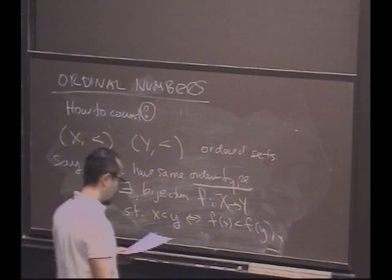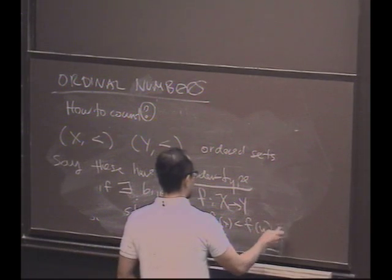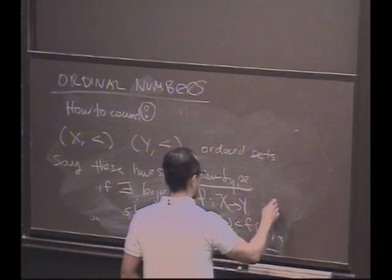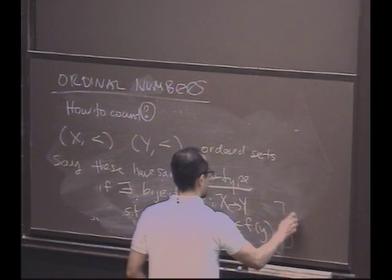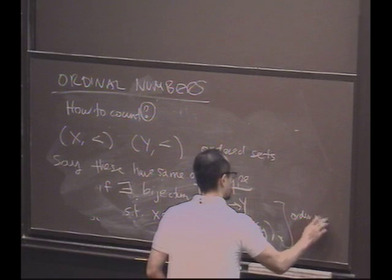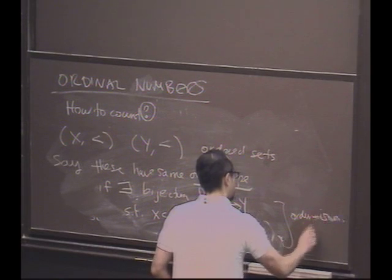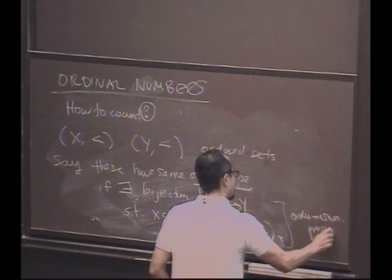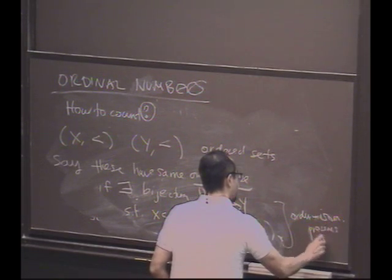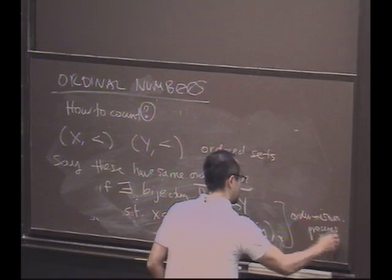We call this thing an order isomorphism, since it preserves order. This is just a way of saying these things look the same from the point of view of orderings.